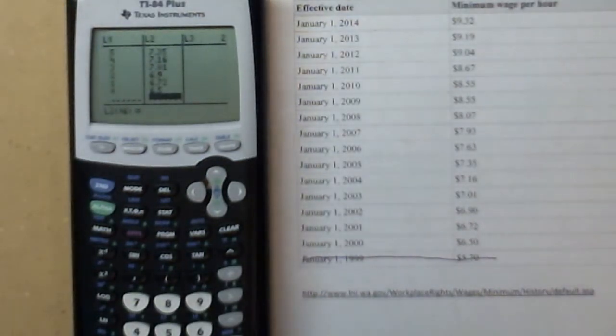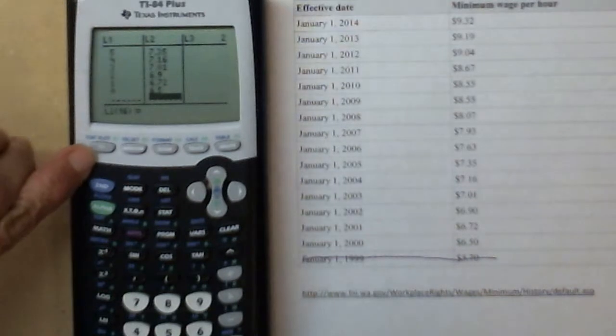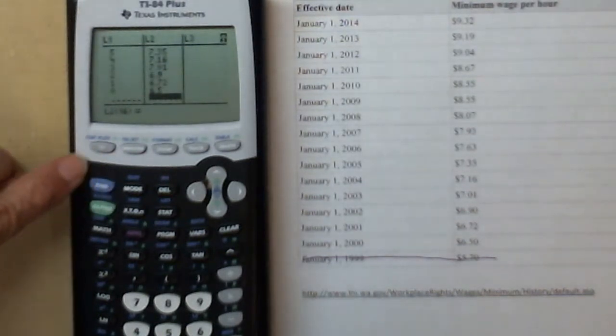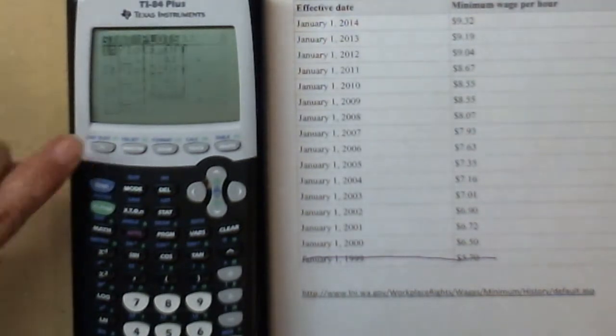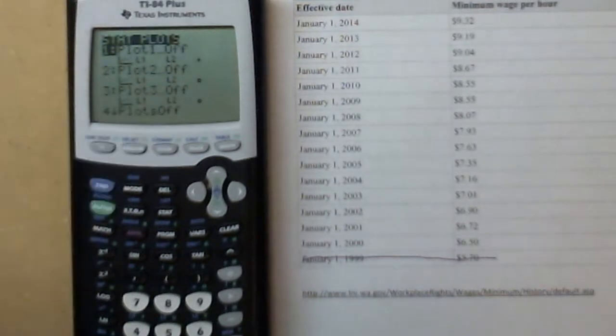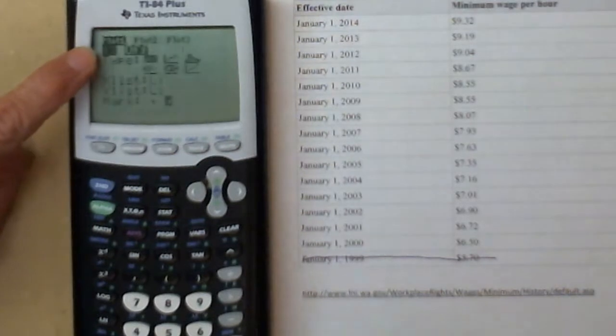Now I need to go look at stat plot. It's right in blue above my Y equals button. I'm going to go second to get to the blue function, second Y equals. And here are my different stat plots. They all are off, so I'm just going to select one by hitting enter when it's highlighted.